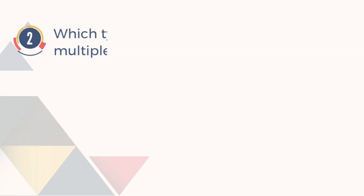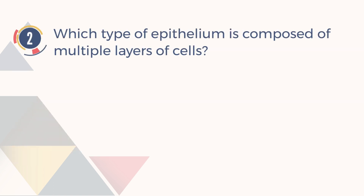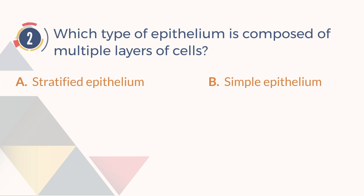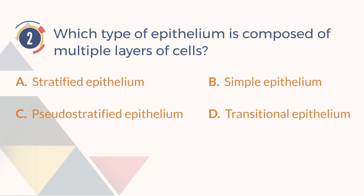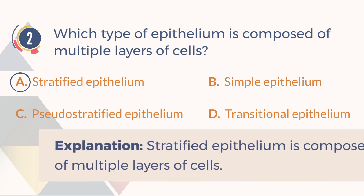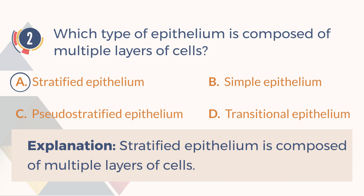Number 2. Which type of epithelium is composed of multiple layers of cells? A. Stratified epithelium. B. Simple epithelium. C. Pseudo-stratified epithelium. D. Transitional epithelium. The answer is A. Stratified epithelium. Explanation: Stratified epithelium is composed of multiple layers of cells.